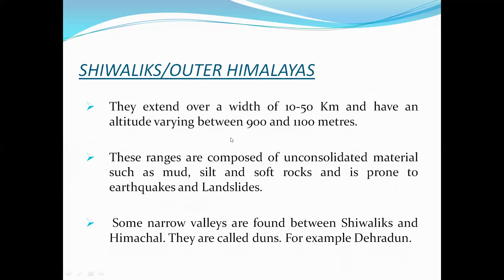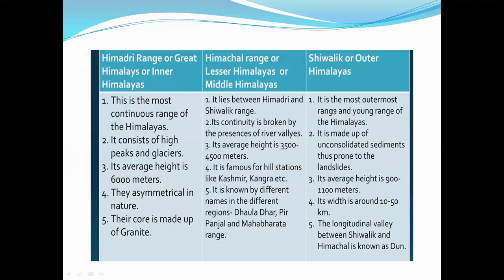Coming to the Shivalik, it extends over a width of 10 to 50 kilometers with an altitude varying from 900 to 1,100 meters. The ranges are composed of unconsolidated material such as mud and soft rocks, making them prone to earthquakes and landslides. Narrow valleys found between the Shivalik and Himachal are called Duns, for example Dehradun. Shivalik are also called outer Himalayas.